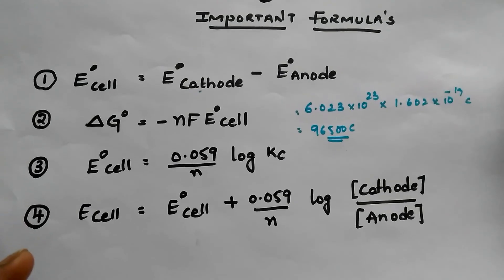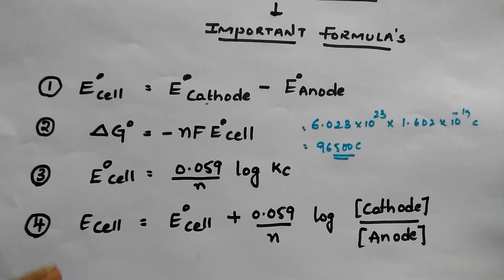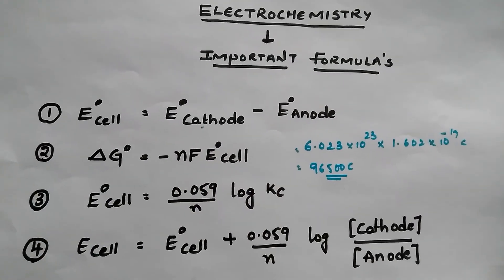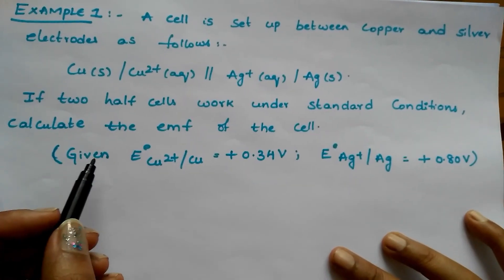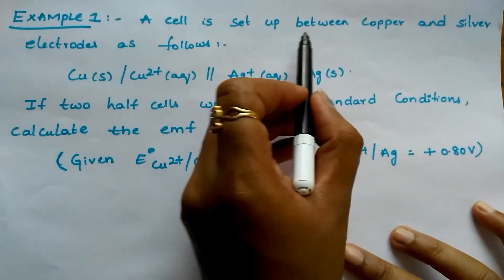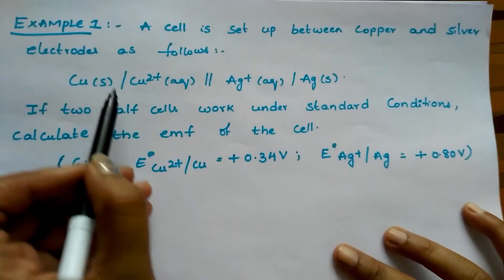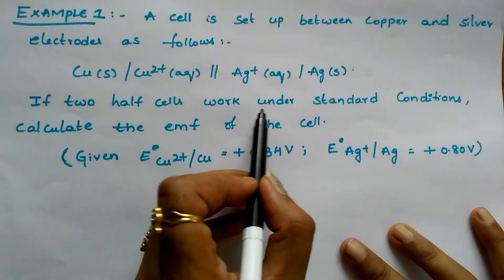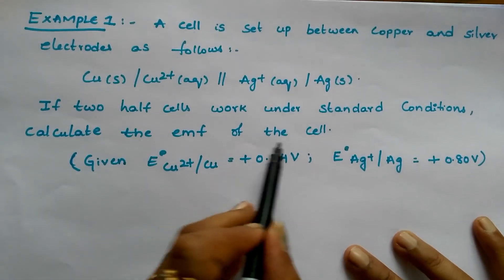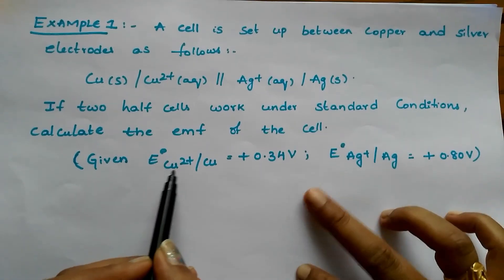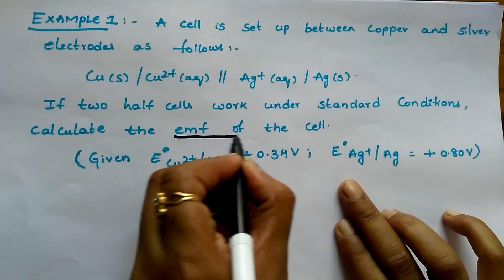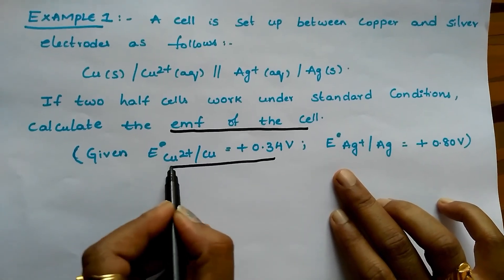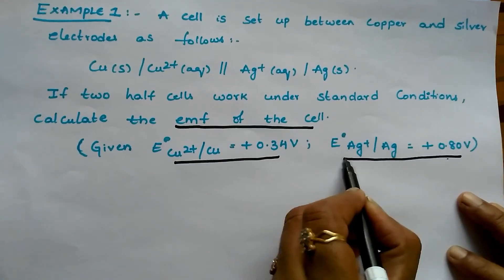These are the 4 important formulas. Now let us go through some numericals — in these numericals these 4 formulas play an important role. A cell is set up between copper and silver electrodes. The reaction is between copper and silver. If the two half-cells work under standard conditions, calculate the EMF of the cell. They are asking for the standard EMF of the cell and have given both cathode and anode reduction potentials.